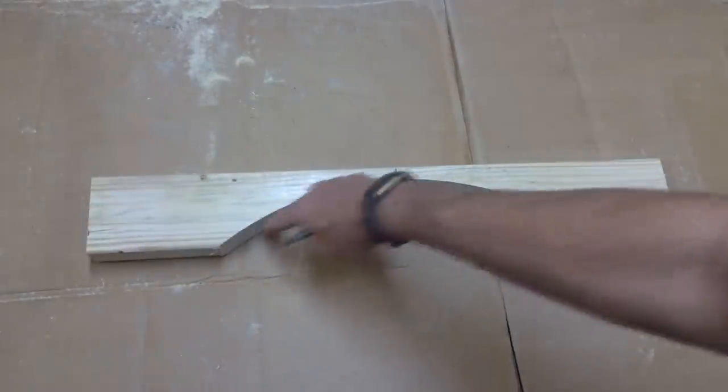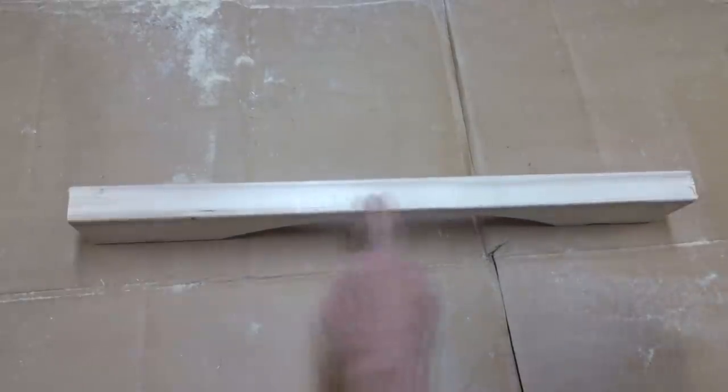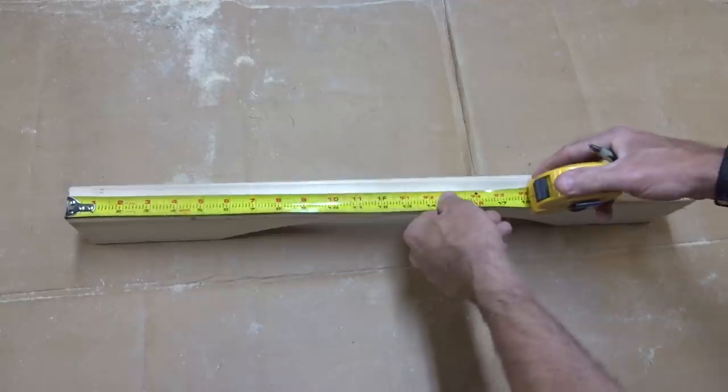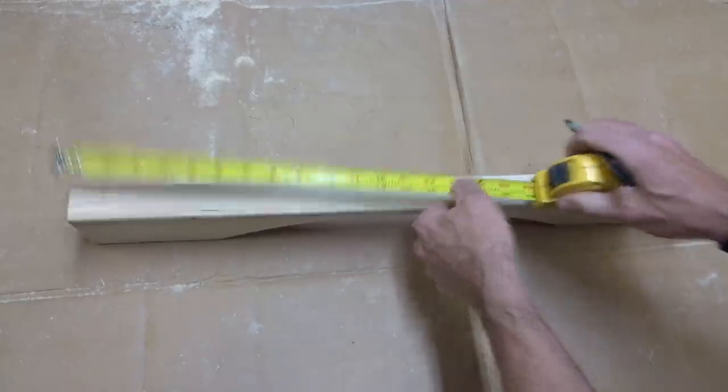So I have my piece of wood here with the curve cut out and I'm going to flip it over on this edge and I want to mark it in the middle. So again, it was 26 inches long. So I want to mark it right at 13 inches, just right in the middle, just like that.